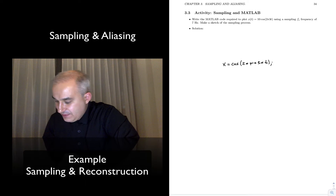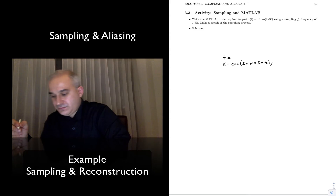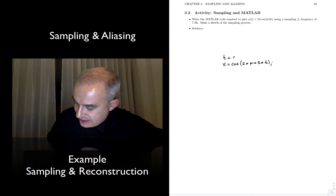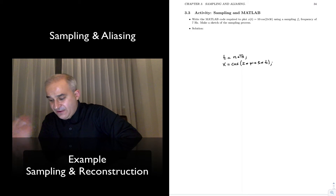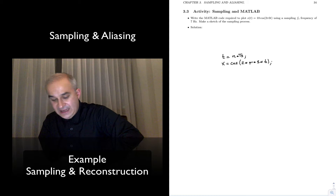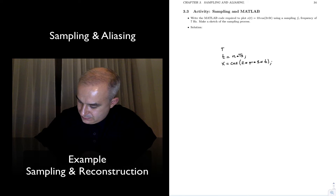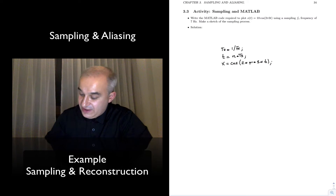That's what we want, and everything is defined as for t. Remember we are sampling it, and so the sampling instances are going to be n times — asterisk for multiplication — ts. We don't have n defined or ts defined. ts is the sampling period, which is 1 over fs, the sampling frequency. And we don't have fs defined — fs is 7.